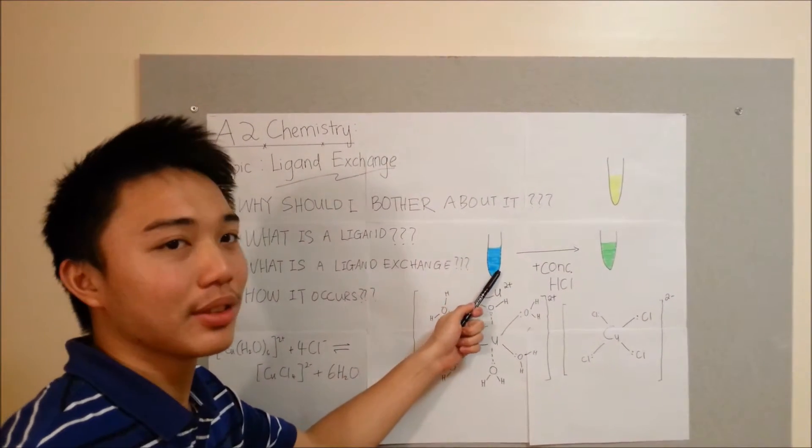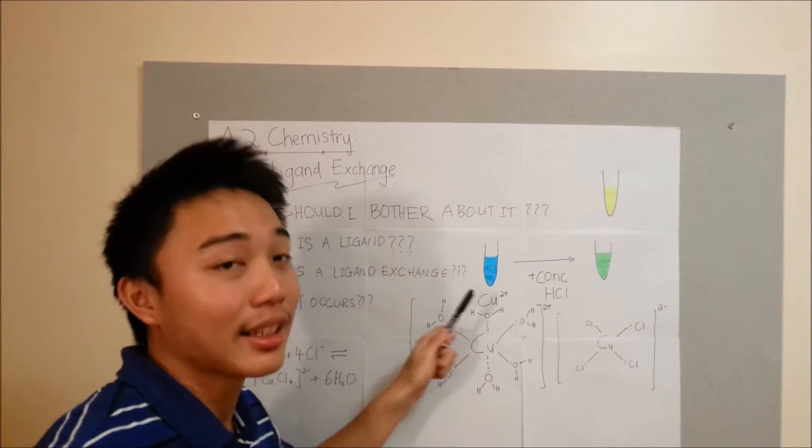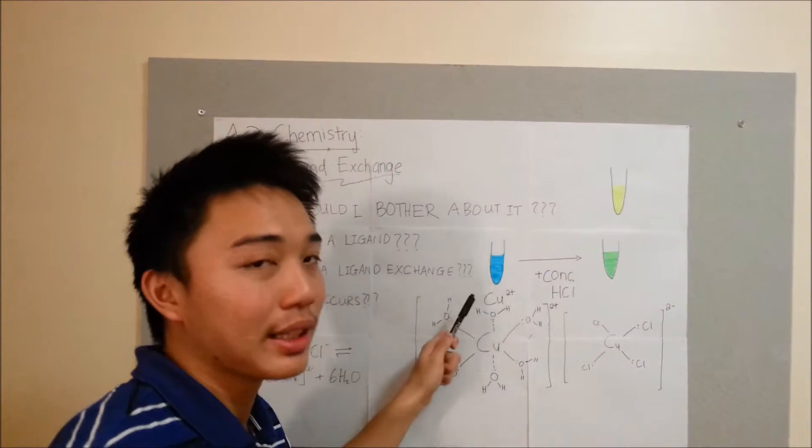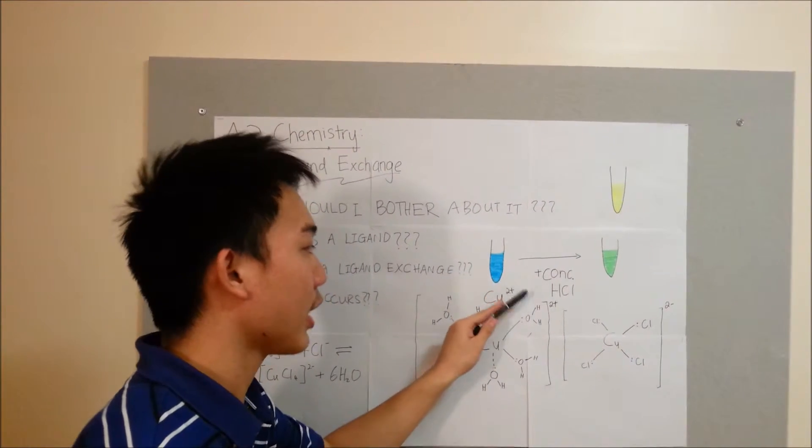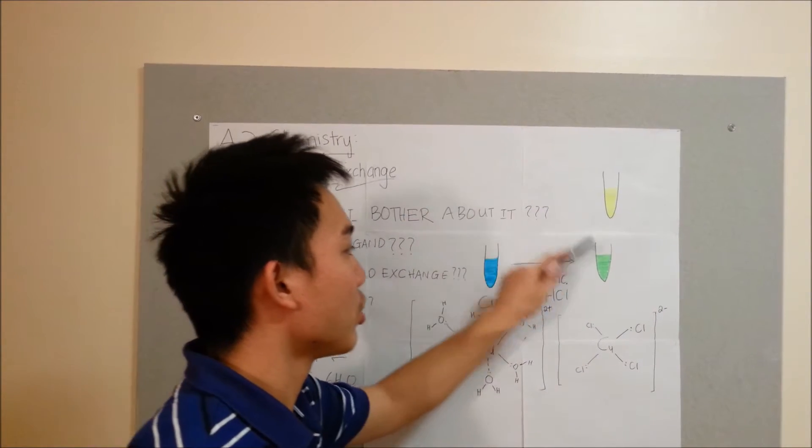So this is an example. This is a Co2+ ion inside a test tube. It is blue in color. And after ligand exchange occurs, it changes to green.